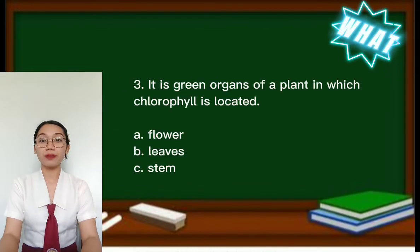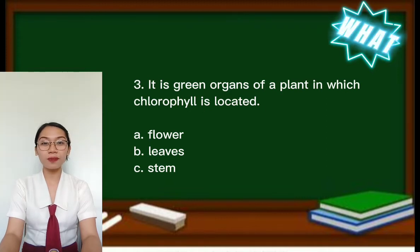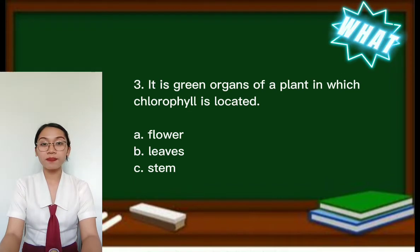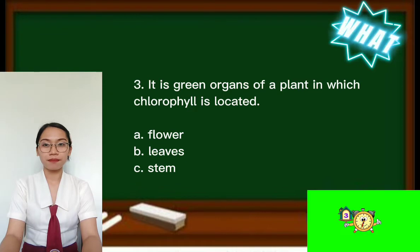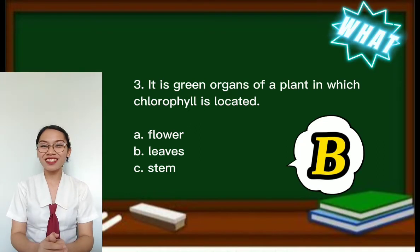Number 3. It is a green organ of a plant in which chlorophyll is located. So if you pick B, you got the right answer.